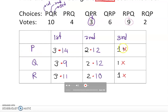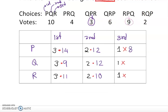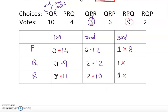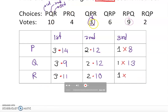Now we are on the third column. Peter in third place: six plus two is eight, so Peter gets 8 here. Quincy in third place: nine plus four is thirteen, so Quincy gets 13. Robert in third place: yes — ten plus three is thirteen, so Robert gets 13.